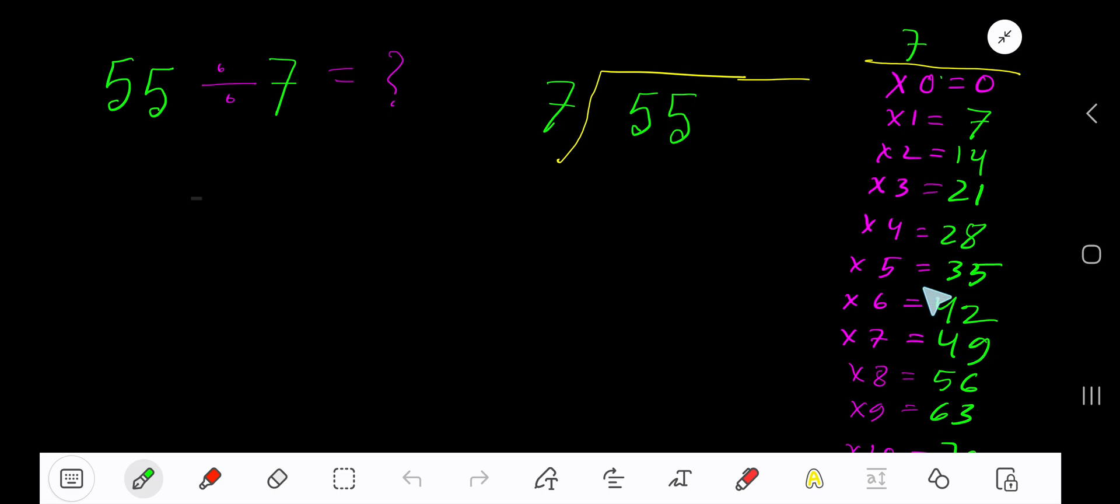21 plus 7 is 28. This process will continue. 7 goes into 5 how many times? 0 times, as 5 is less than 7. 0 times 7 is 0, subtract from 5, bring down the next digit to get 55. 7 goes into 55 how many times? 7 times. 7 times 7 is 49, subtract.